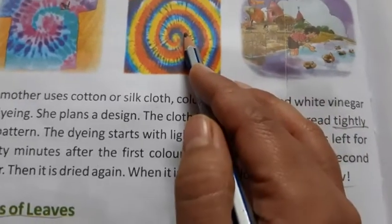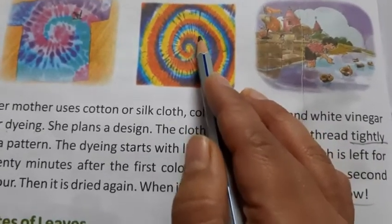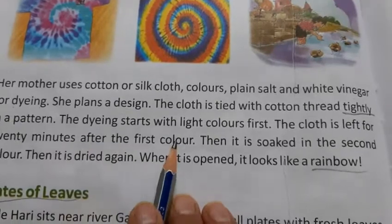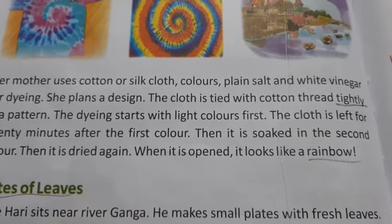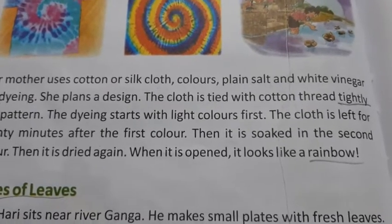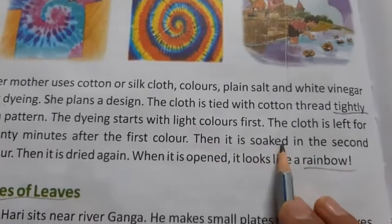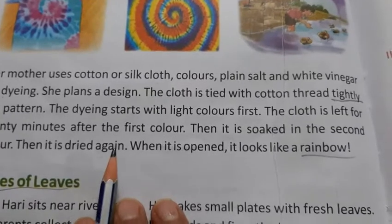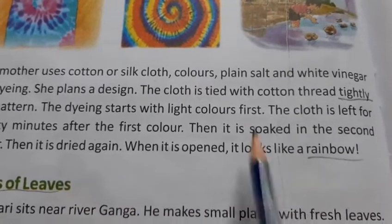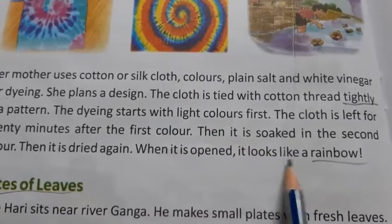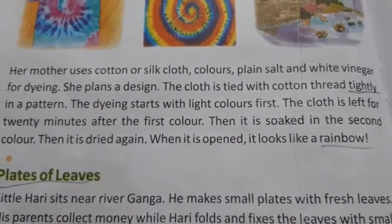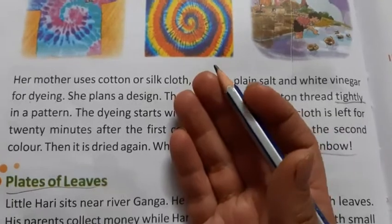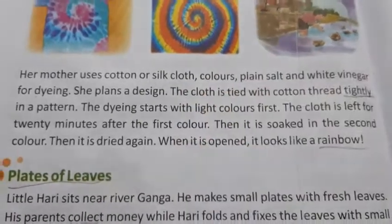After the first color, the cloth is left for 20 minutes so it soaks well. Then it is soaked in the second color and dried again. When it is opened, it looks like a rainbow — woh is tarah rainbow jaisa dikhta hai. This bandhej work also happens in factories and in many homes, so many of you will be familiar with how it looks.